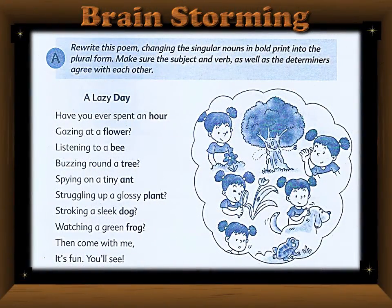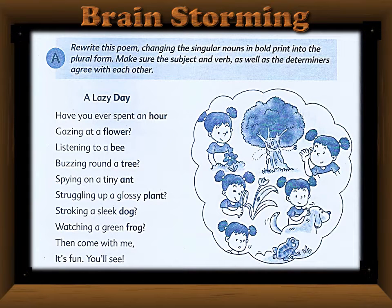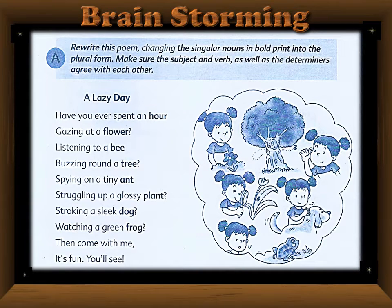Brainstorming exercise. Here you can see Exercise A, and I am reading the question for you: rewrite this poem changing the singular noun in bold print into the plural form. Make sure the subject and verb, as well as the determinants, agree with each other. In the poem, some nouns are written in bold form — all those nouns are singular — and we will rewrite this poem by changing these singular nouns into plural.